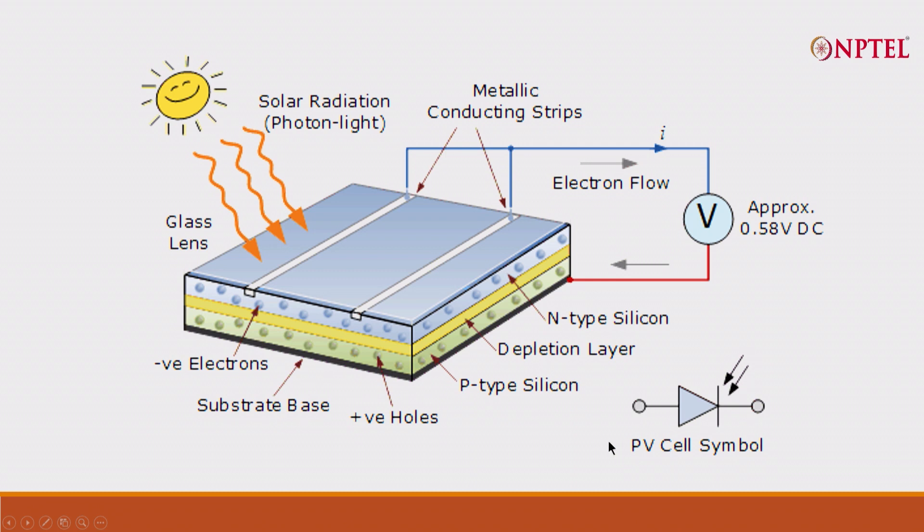This shows light is falling. When light is falling, the cell will produce electricity. And the approximate voltage will be 0.58 volt DC. This is for a single cell.